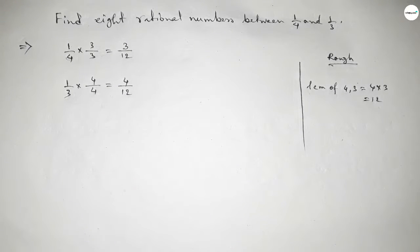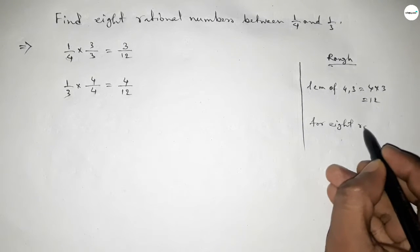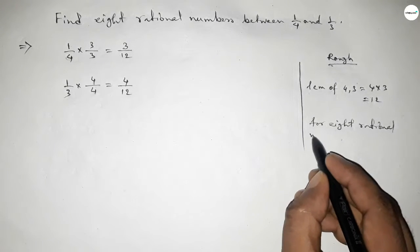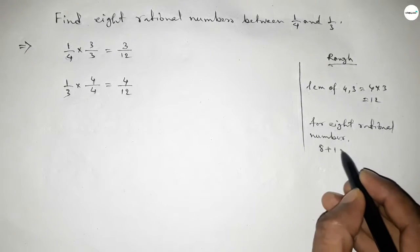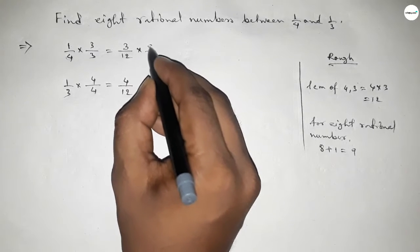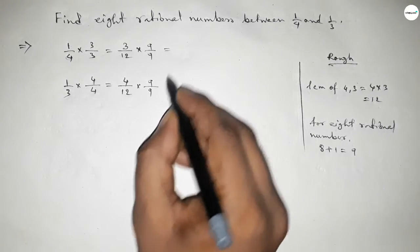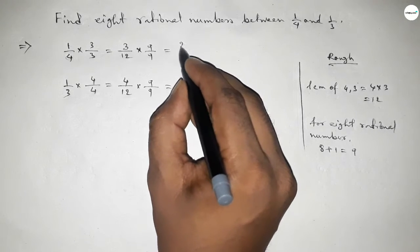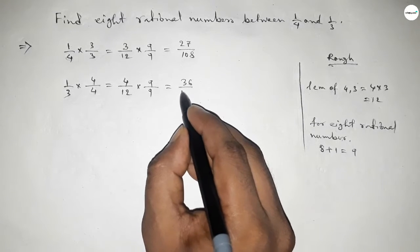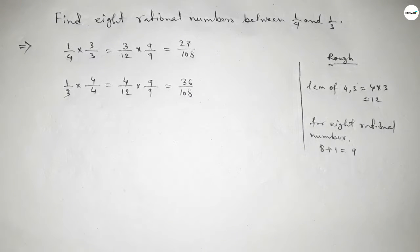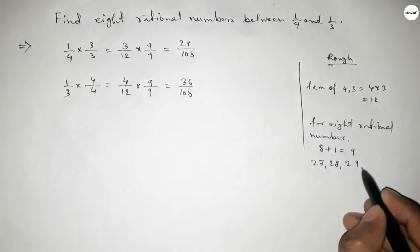Now for finding 8 rational numbers between any two numbers, we have to follow this method. We should multiply 8 plus 1 equals 9 with both numbers. So this is 27/108 and this is 36/108.